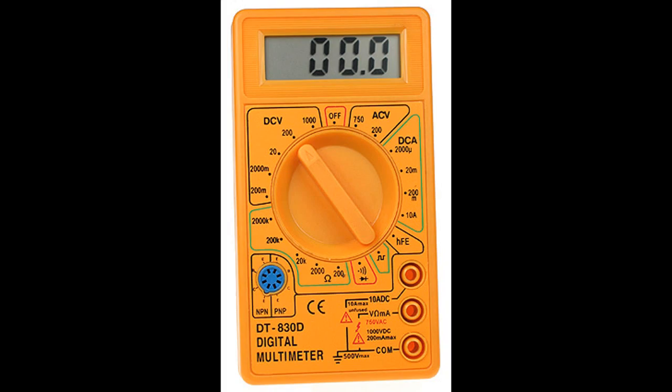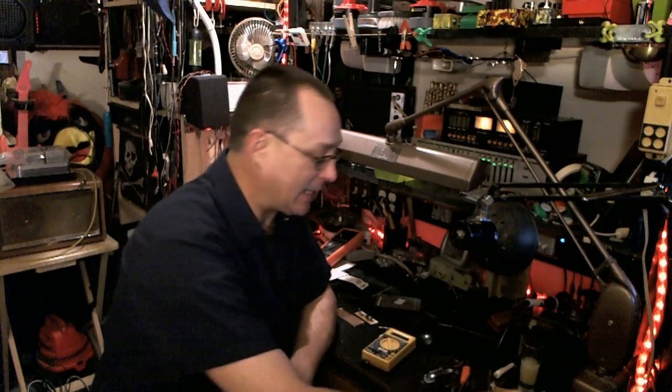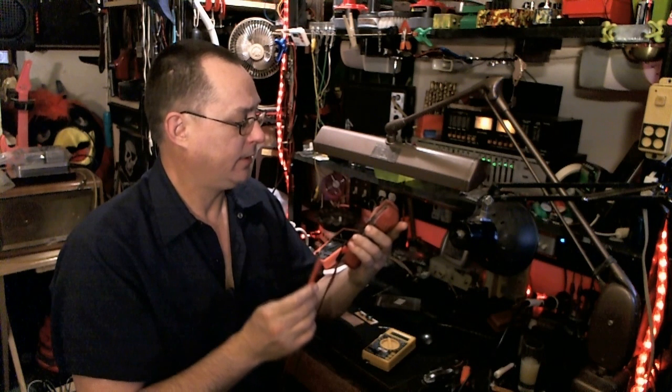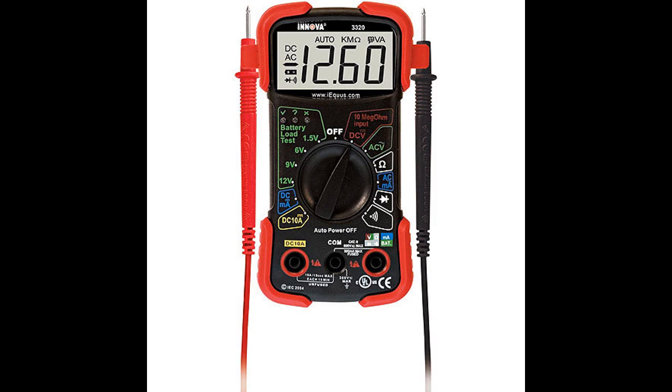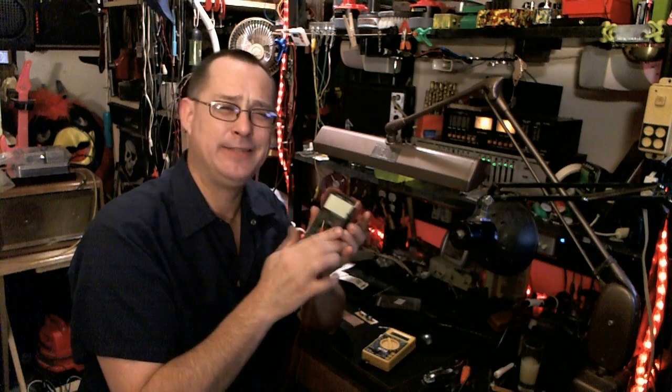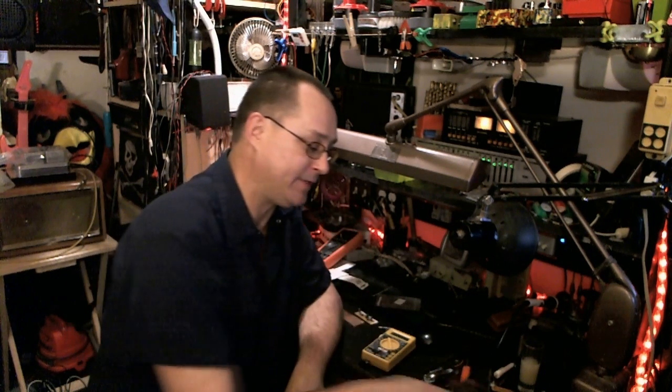So this is my El Cheapo meter. You know, I've got this Walmart. It's an Equus Innova 3320. This is like my meter, and I love this thing. It was like $18.50 when I got it. They're like $24.50 now. But it doesn't have the HFE test.